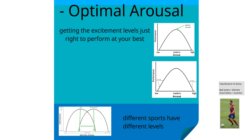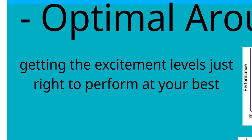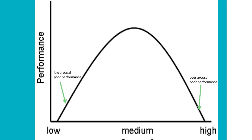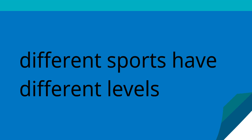Optimal arousal means getting excitement levels to the right point so that you can perform at your best. On the inverted U graph, as arousal increases so does performance — up to a point. Beyond this point, increased arousal levels result in a drop in performance. The point at the top of the inverted U shape is referred to as optimal arousal. Optimal arousal does not mean maximal arousal. Both over-arousal and under-arousal can contribute to poor performance, so getting arousal levels correct is the key for success in sport.